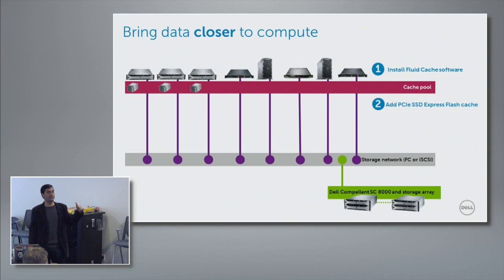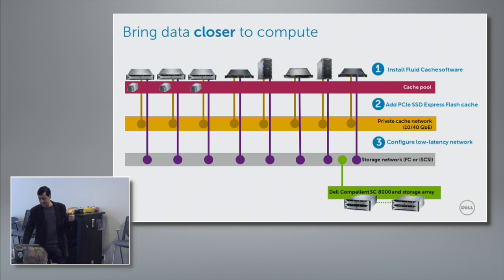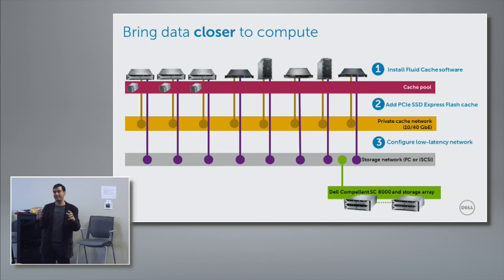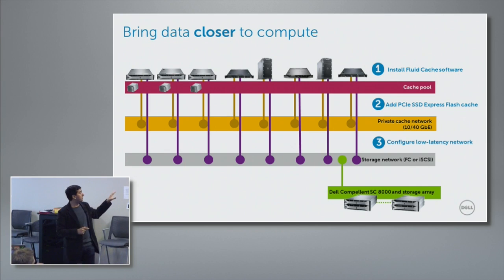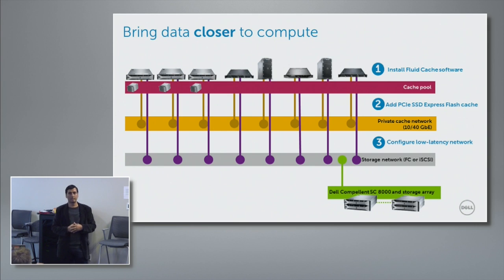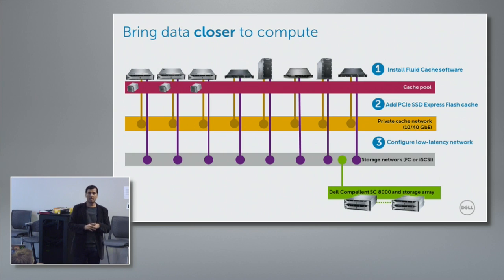Once those drives are installed, we bring them together as one big cache pool over a low-latency network. That network is important — if we used normal TCP/IP, we'd reintroduce latency. So we use RDMA, which is typically one-third the latency of TCP/IP. Our first implementation is RoCE — RDMA over Converged Ethernet. Architecturally, Fluid Cache could work on TCP/IP, IB, or iWARP, but RoCE is what we've validated in this release.